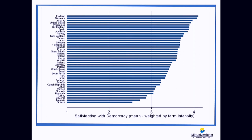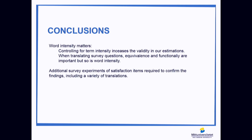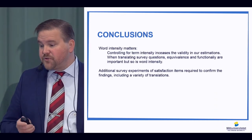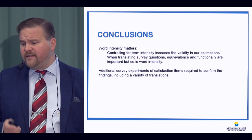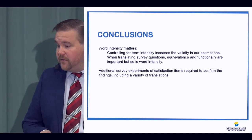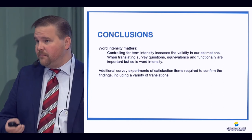Denmark is no longer in top — Thailand is. Whether Thailand should be in a survey on satisfaction with democracy is another question, but they're included. Sweden was in fifth place and is now down to twelfth. So this apparently matters a lot. The conclusions here are that word intensity matters, and controlling for term intensity is one simple way to increase validity in our estimations.